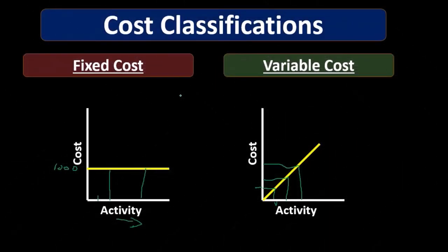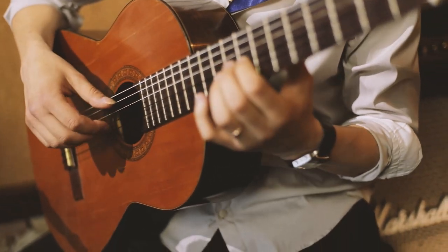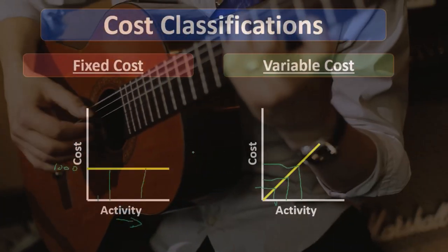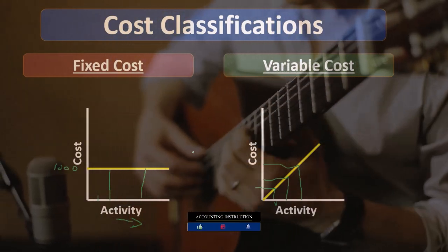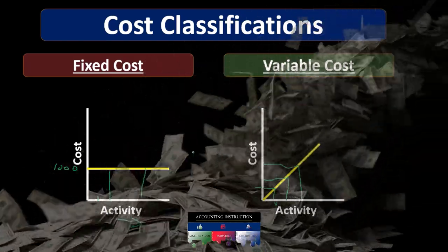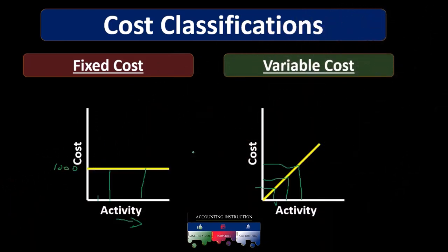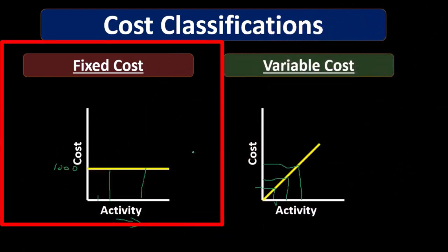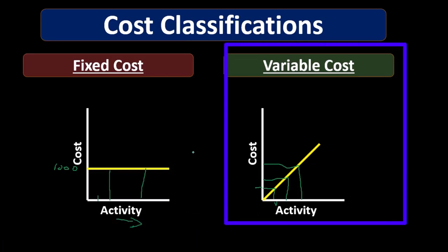Some costs will line up into these two categories very easily — it won't be a problem. If we're talking about wood in the guitar, that's pretty straightforward. If we're talking about rent, that's pretty straightforward. But we're going to have some things that aren't quite as easy to place into these two components. They may have some combination between fixed and variable costs. What we really want to do is break them out between those two for our projection purposes, and we'll talk about different methods to do that. One of our goals in managerial accounting is to break everything out between fixed costs and variable costs, allowing us to make nice projections into the future.